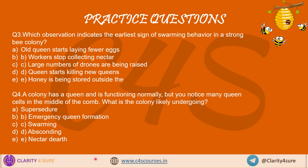Swarming behavior may begin. Question 3: Which observation indicates the earliest sign of swarming behavior in a strong bee colony? (A) Old queen starts laying fewer eggs. (B) Workers stop collecting nectar. (C) Large numbers of drones are being raised. (D) Queen starts killing new queens. (E) Honey is being stored outside the hive. Question 4: A colony has a queen and is functioning normally, but you notice many queen cells in the middle of the comb. What is the colony likely undergoing? (A) Supersedure. (B) Emergency queen formation. (C) Swarming. (D) Absconding. (E) Nectar dearth.